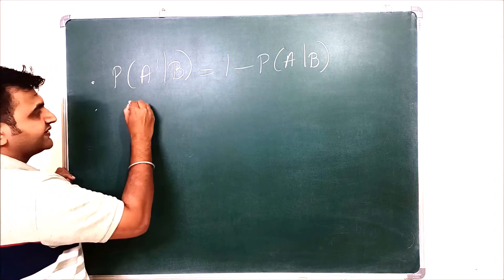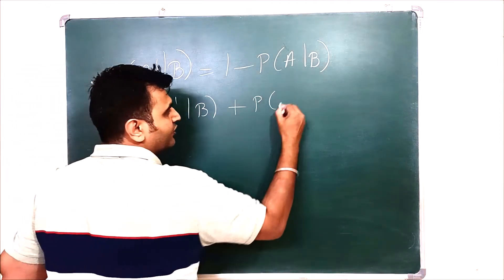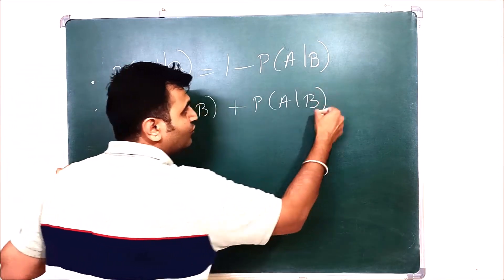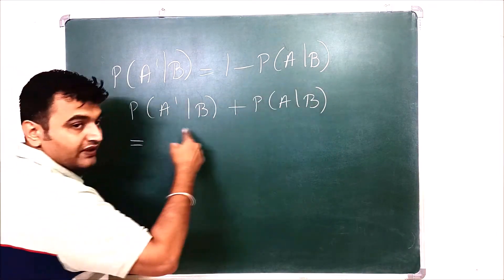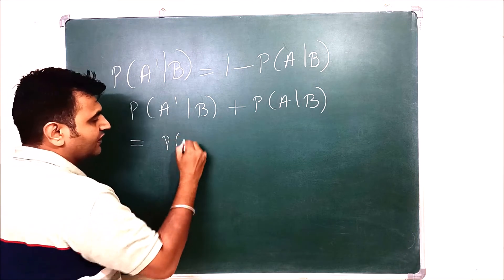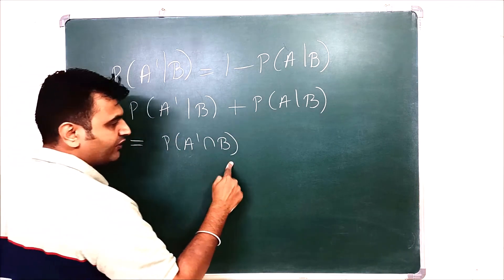So I want to prove this. That means we want to prove probability of A complement given B plus probability of A given B is equal to one. So start with this. I want to show this is equal to one. But what is this by definition? Probability of A complement intersection B upon probability of B.